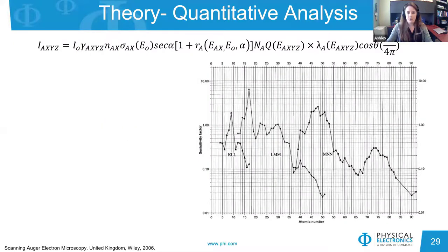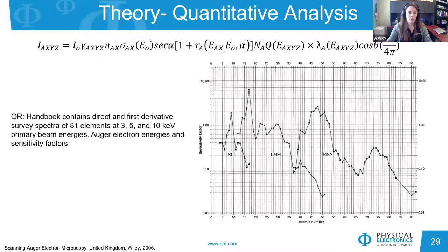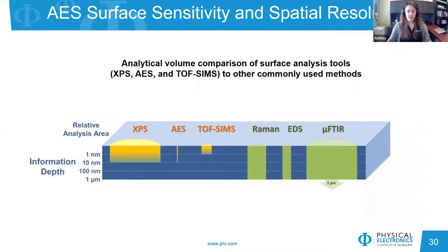Here's a graph showing all of the relative sensitivity factors for the major Auger transitions for all 81 elements present in our handbook. All of this data is available in the handbook and is also integrated into our MultiPak software for automated software-driven quantification. A schematic comparing AES to other common analysis techniques shows that AES has a smaller spot size compared to other surface sensitive techniques such as XPS and TOF-SIMS, and is much more surface sensitive than Raman, EDS, or FTIR.